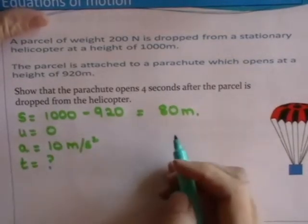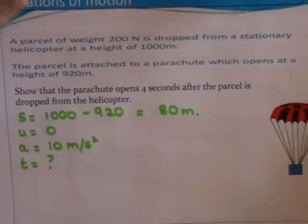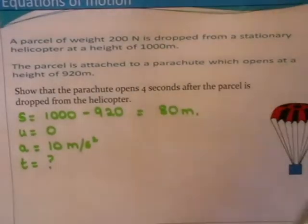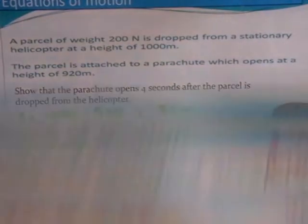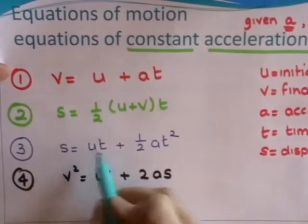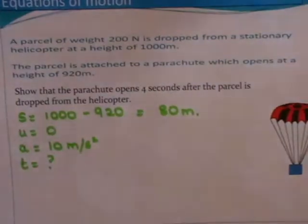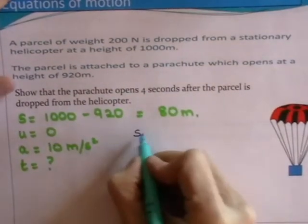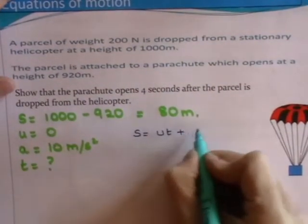So we need an equation which links s, u, a, and t. If we look back at our equations again, you can see that's equation three: s, u, a, and t. So s equals ut plus a half at squared.